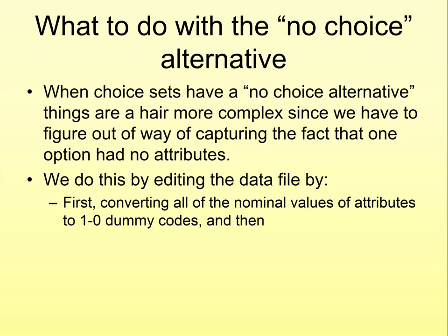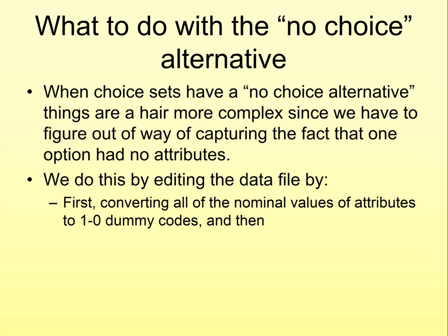Next, and this is the most important part, for each choice set, we'll be adding a new row to capture the no-choice option. So the no-choice option, of course, doesn't have any attribute values. By convention, we're going to be assigning a value of minus one for the values of this option.